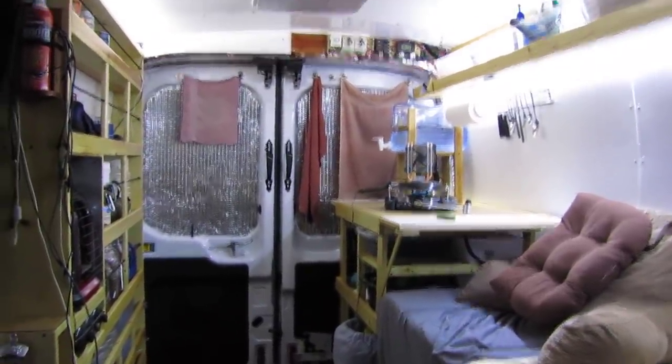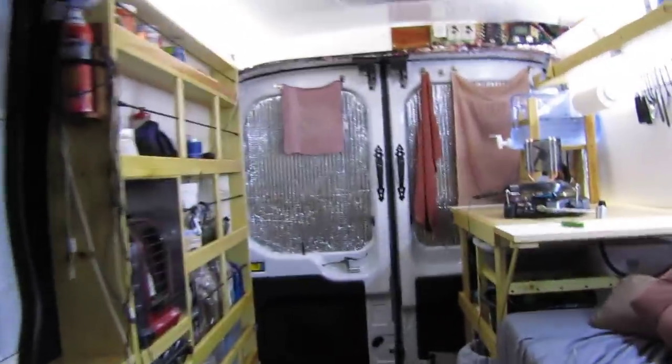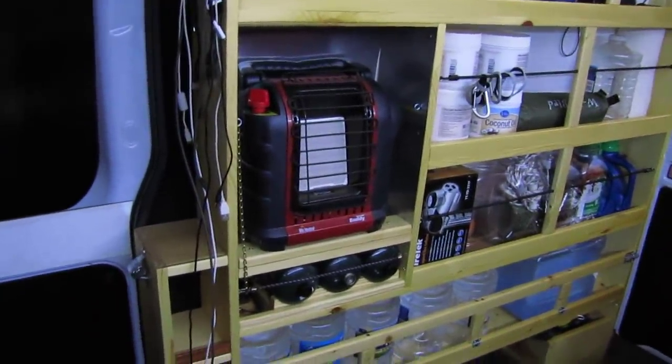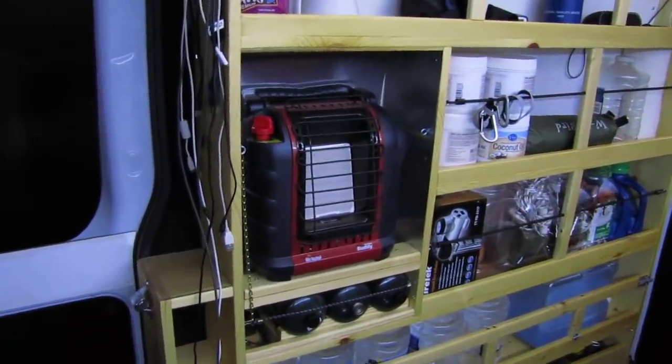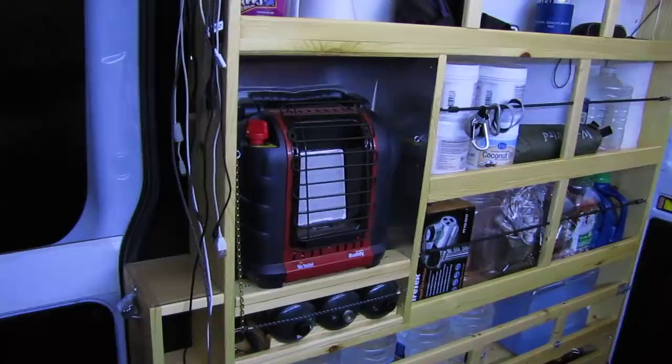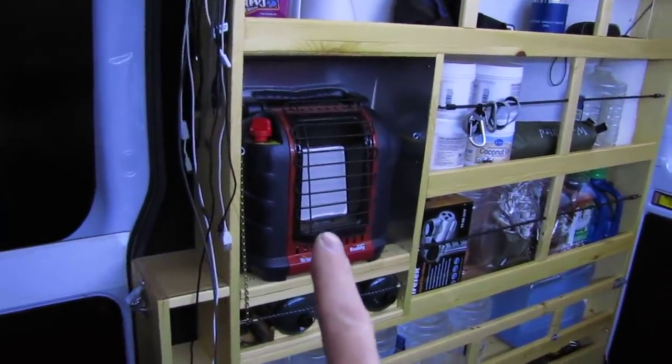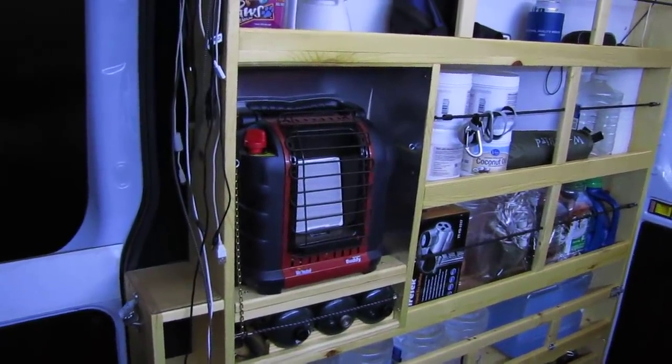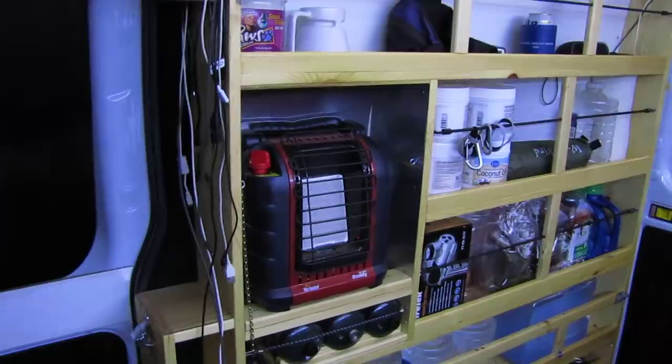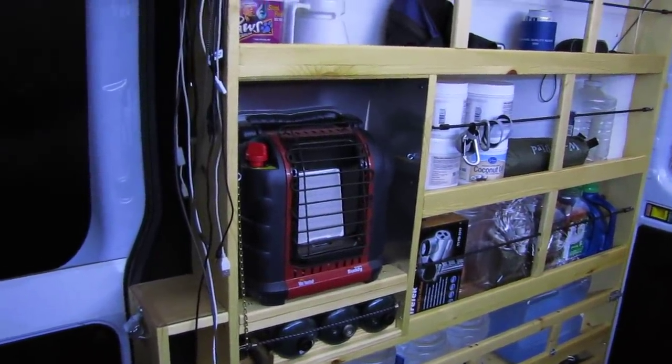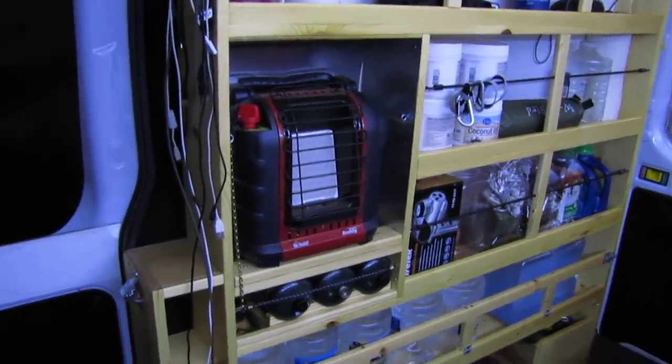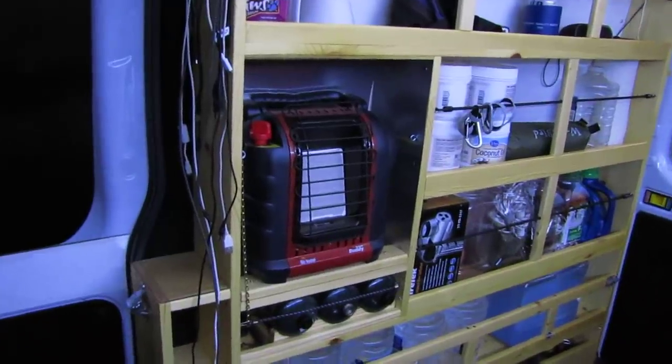Originally what I planned a space for here was this portable Buddy Mr. Heater propane heater. There's a problem with that, and I see this all over YouTube now. That heater on low is 4,000 BTUs, which is just way too powerful for a small space like this van. It'll run you out of here in just a few minutes. It needs to be maybe a thousand BTU and the size of a small toaster.